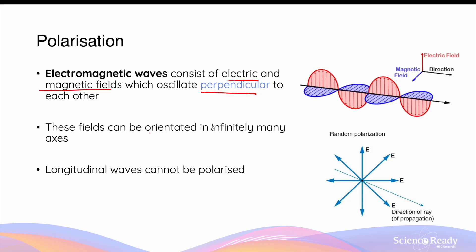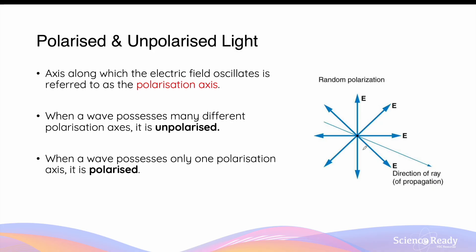It is important to understand that only transverse waves, which electromagnetic waves are also classified as, can be polarised. Longitudinal waves, such as sound, cannot be polarised because the direction of oscillation is parallel, not perpendicular, to the direction of propagation.